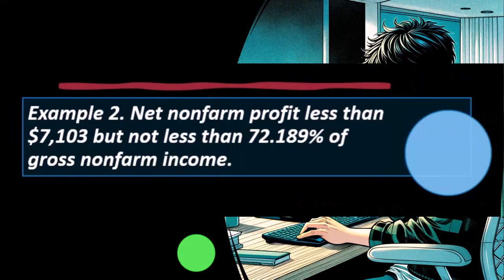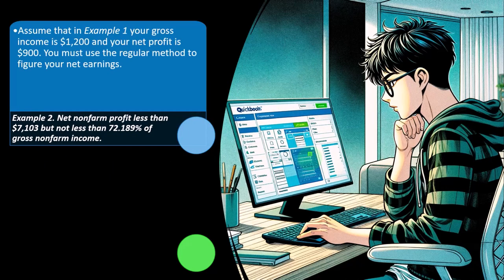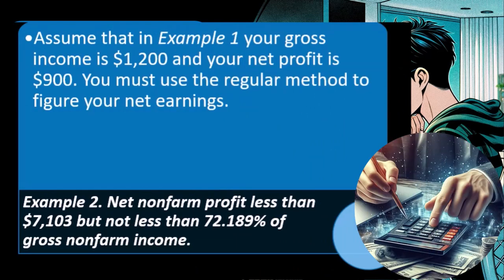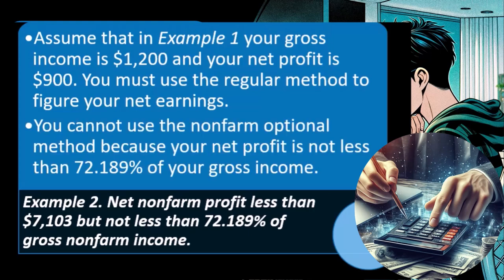Example two: net non-farm profit less than $7,103 but not less than 72.189% of gross non-farm income. Assume that in example one your gross income is $1,200 and your net profit is $900. You must use the regular method to figure your net earnings. You cannot use the non-farm optional method because your net profit is not less than 72.189% of your gross income.